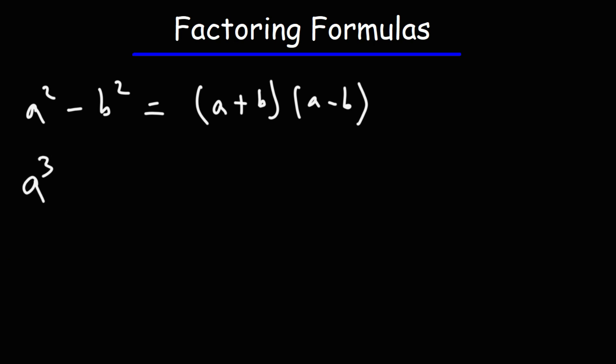Next, if you have the sum of two cubes or sum of perfect cubes, a cubed plus b cubed, to factor it, it's going to be a plus b. A is just the cube root of a to the third. So it's a plus b and then a squared minus ab plus b squared.